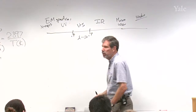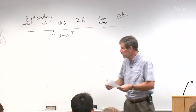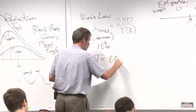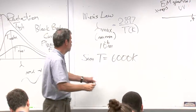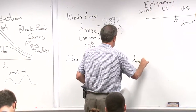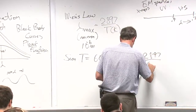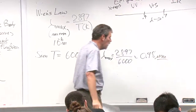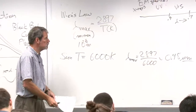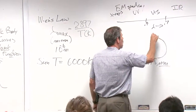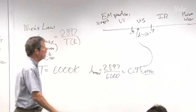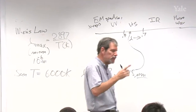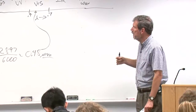You might want to remember 0.4 and 0.7 as the range of the visible part of the spectrum. For the Sun, the surface is approximately 6,000 Kelvin. If I plug into that formula to get lambda max, it's going to be 2897 over 6,000 — that's approximately 0.48 microns — roughly in the middle of the visible range of the spectrum. That's kind of interesting, and you might want to think: is that just an accident? Make a little question mark here.